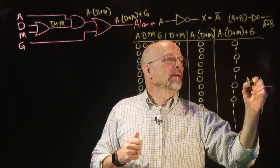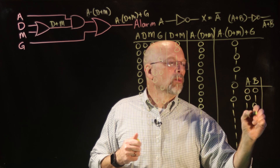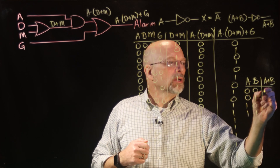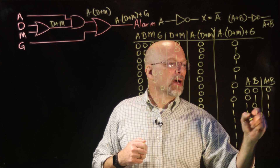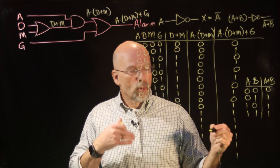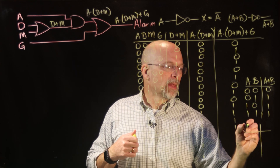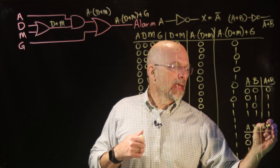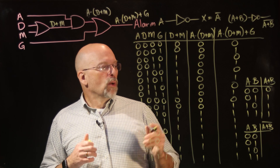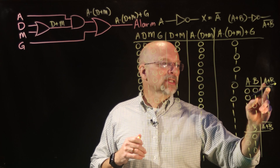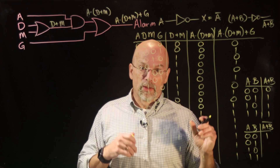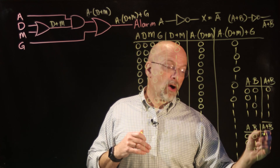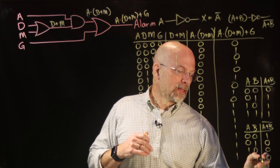For a simple truth table with inputs A and B — values 00, 01, 10, 11 — A OR B gives 0, 1, 1, 1. But with a bar over A OR B, every time A OR B is 0, the barred output is 1, and every time A OR B is 1, the barred output is 0. So the result is 1, 0, 0, 0 — the complete inverse.